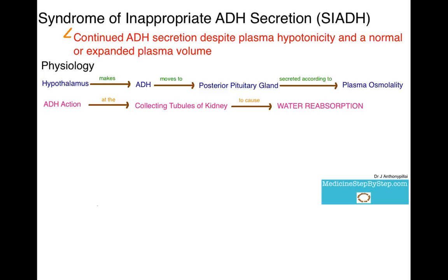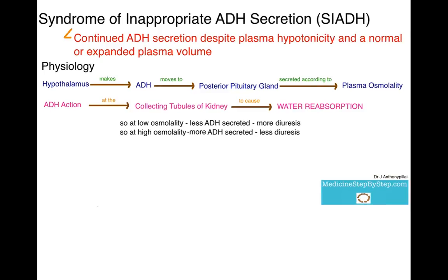So, if you are dehydrated, there should be increased ADH secretion to cause increased water reabsorption by the kidneys. Normally at low osmolality, less ADH is secreted by the posterior pituitary gland and so there is more diuresis — the person passes more urine. If there is high osmolality, more ADH is secreted and so there is less diuresis — the person passes less urine.